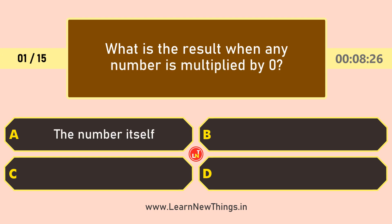What is the result when any number is multiplied by 0? The answer is 0.